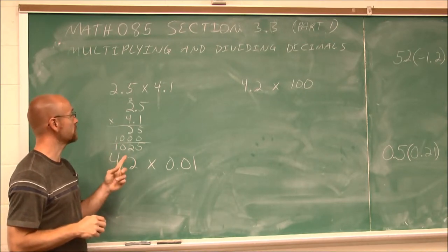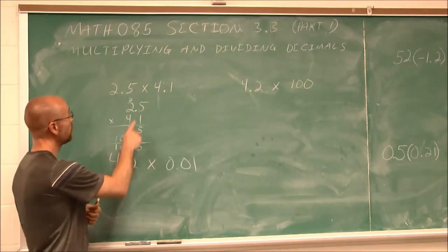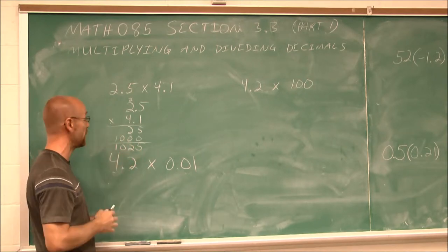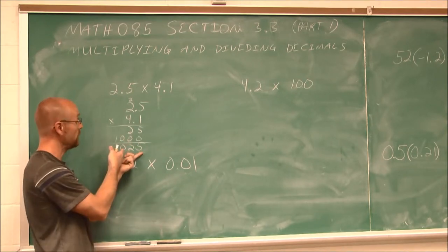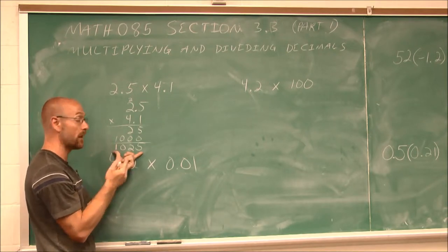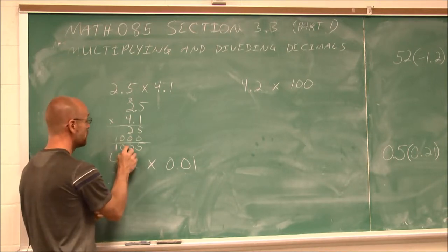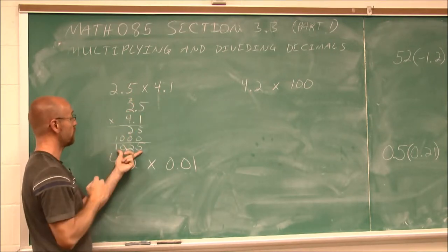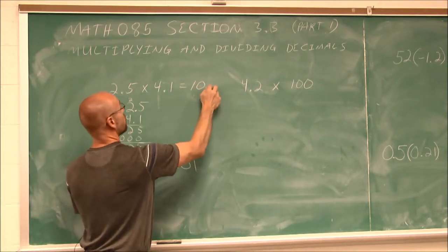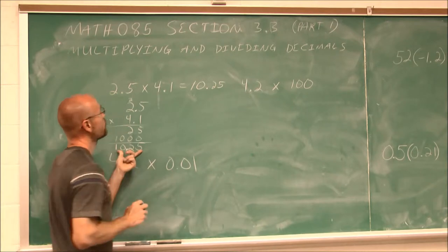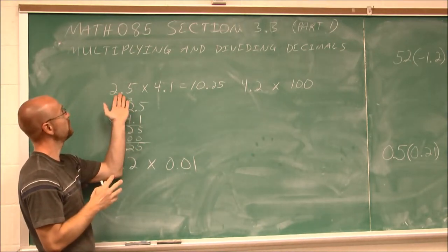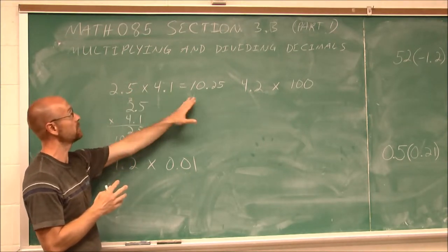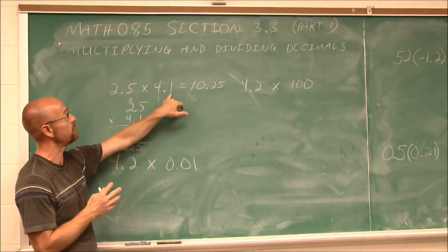Now we have to account for the decimal. How many digits were to the right of any decimals? I have one digit to the right in 2.5 and one digit to the right in 4.1, so I have two digits total to the right of any decimals. So when I look at this sum of the partial products, I have to place two digits to the right of the decimal. So 2.5 times 4.1 equals 10.25. And if we estimate, 2.5 times 4 is approximately 10, which is close to our answer of 10.25.